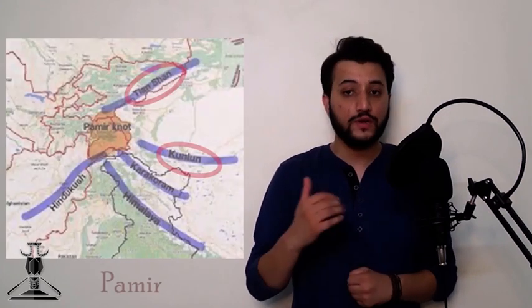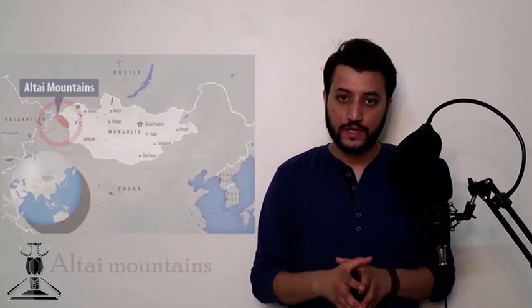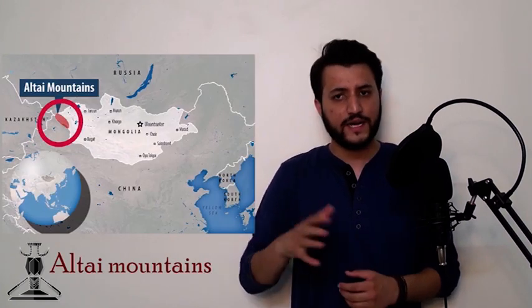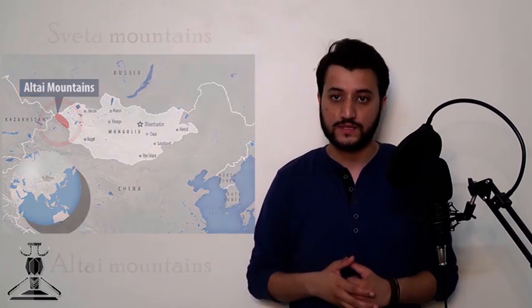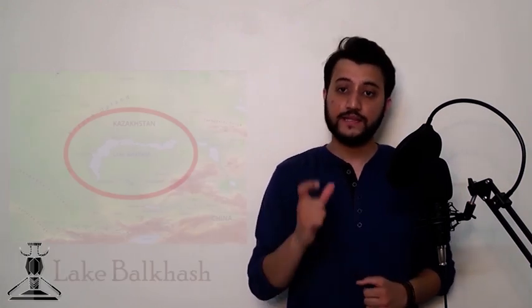The mountain range to the north of Kunlun is the Tien Shan, which can be identified as the Nila mountains. Between Tien Shan and Kunlun Shan are the Pamir mountains and surrounding lowlands, identifiable as the Elavruta region. Beyond Tien Shan to the north are the Altai mountains, identifiable as the Shweta mountains. The region between Tien Shan and Altai — containing Lake Balkhash and the Dzungaria valley — is identifiable as the Shweta Varsha.